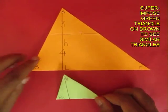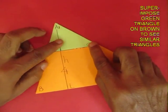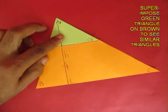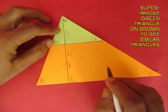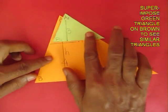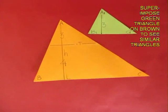Now these are the two triangles and now you can take the green triangle and superimpose the green triangle on the brown one to see exactly similar triangles. The height of the green triangle is 3 and that of the brown triangle is 7.